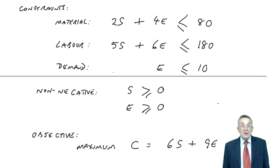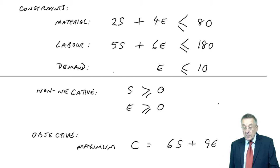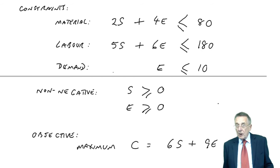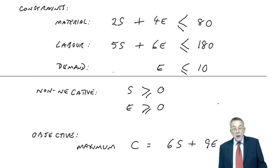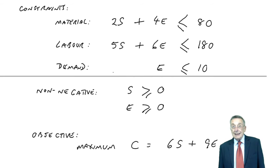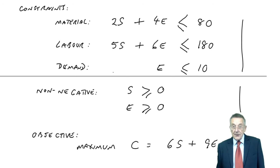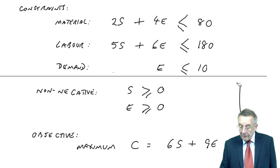And, there we are, in terms of what we call formulating the problem. And, although, clearly, we've yet to find a solution, certainly, you're quite likely to get some objective test questions, which are just asking you to formulate all or part of a linear programming problem. So, I hope that makes sense. Again, there is the problem. We've got to find what values of S and E generate the maximum C contribution without breaking any of those constraints.